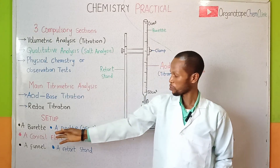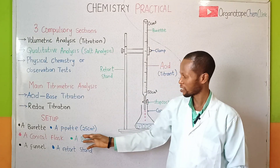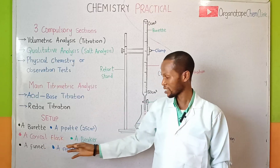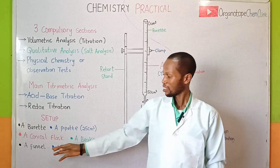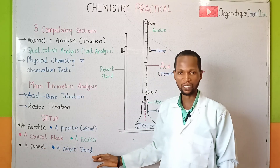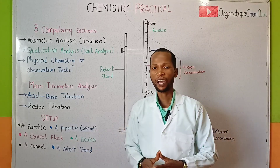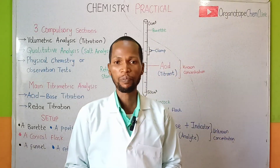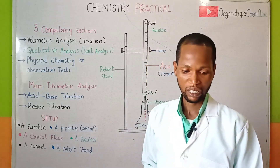Let's set up our titration station. Here is what you will need: a burette, a pipette, a conical flask, a beaker, a funnel, and a retort stand. We need to identify these materials one by one — can you identify your apparatus?